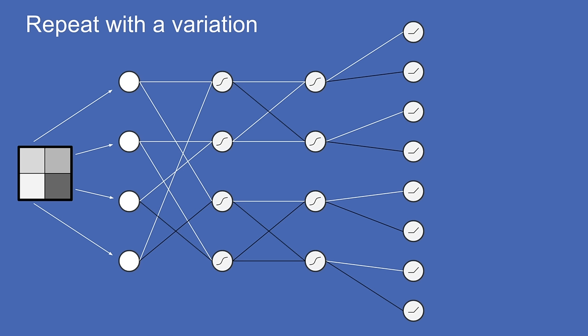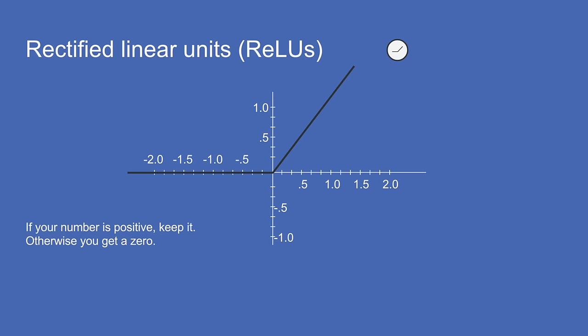To mix things up, we'll create a new layer that uses a rectified linear unit instead of a squashing function. This is another popular neuron type: you do the weighted sum of your inputs, and instead of squashing, you rectify — if the result is negative, you set the value to zero; if it's positive, you keep it. This is obviously very easy to compute and also has very nice stability properties for neural networks in practice.